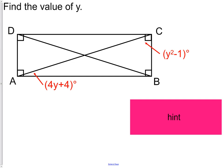Here's the next question. It says, find the value of Y. Well, we have an angle here, 4Y plus 4. That's this angle right down there. Then we have another angle up here. Y squared minus 1 would be that angle right there.